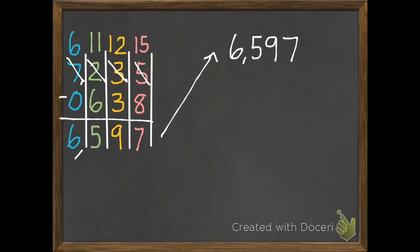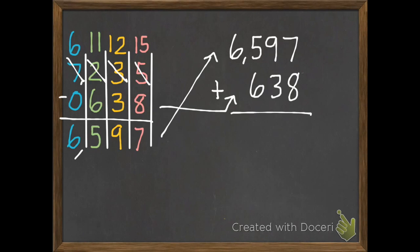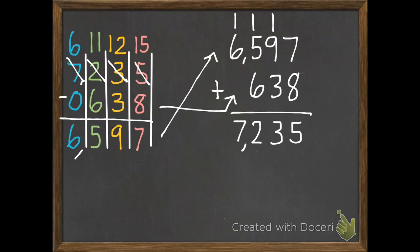Addition and subtraction are inverse operations, so we can switch them around. I have 6,597 — instead of subtracting, I'm going to add 638. 7 plus 8 is 15, 1 plus 9 plus 3 is 13, 1 plus 5 plus 6 is 12, 1 plus 6 is 7. Our sum is the same as our minuend, 7,235, so we know we did it right.